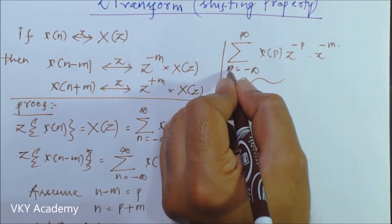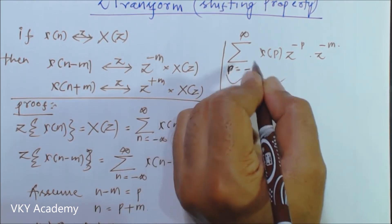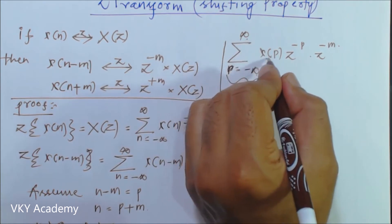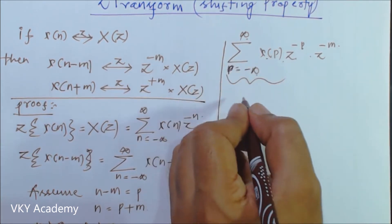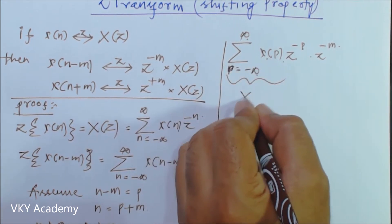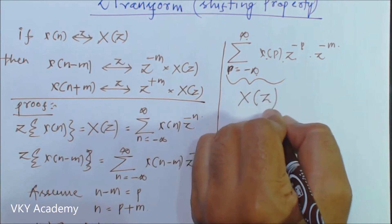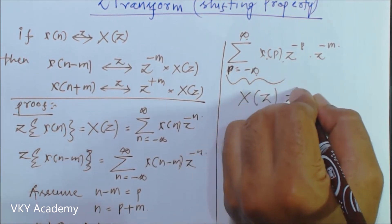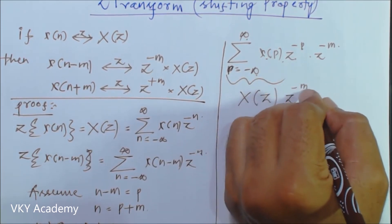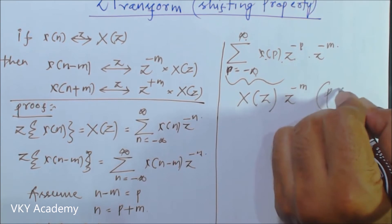Now the summation from p equal to minus infinity to infinity of x of p times z to the power minus p can be written as X of z. And this one is z to the power minus m. Hence the first shifting property is proved.